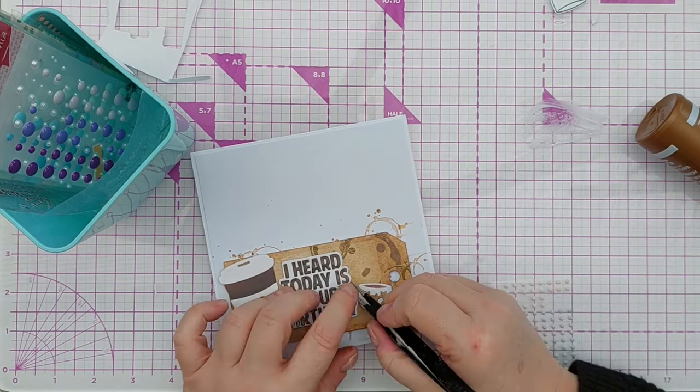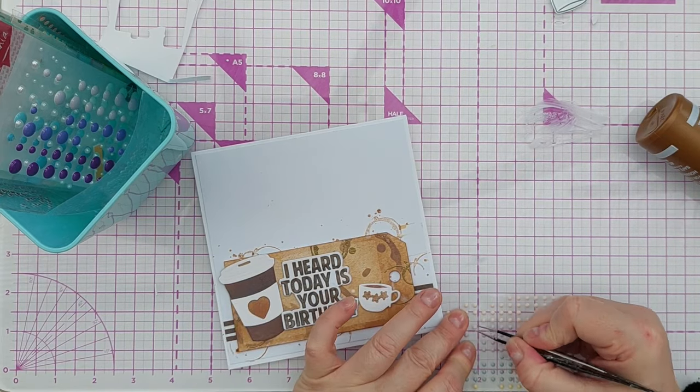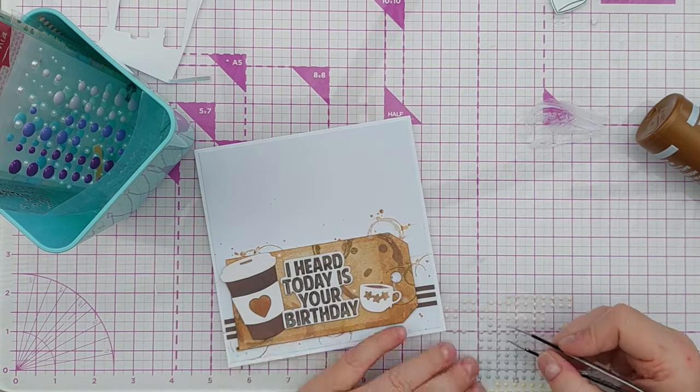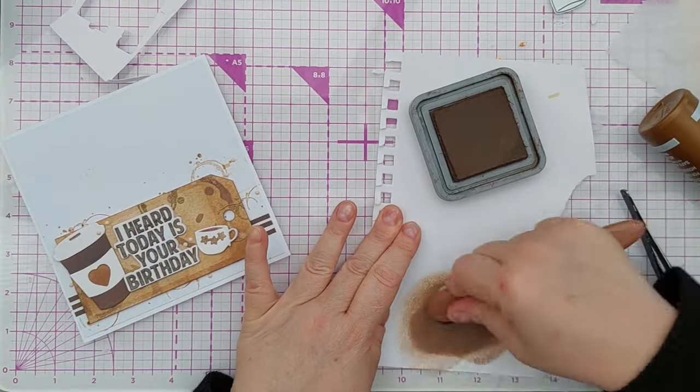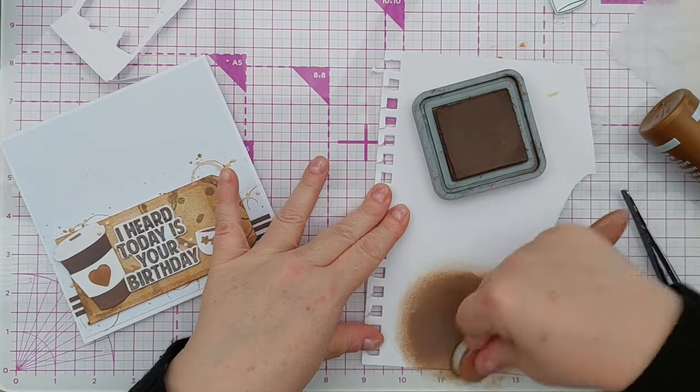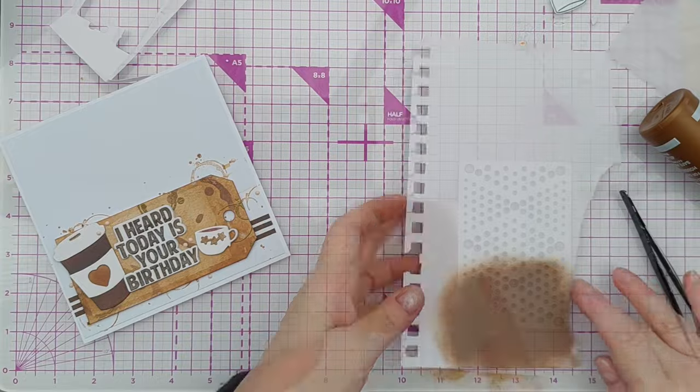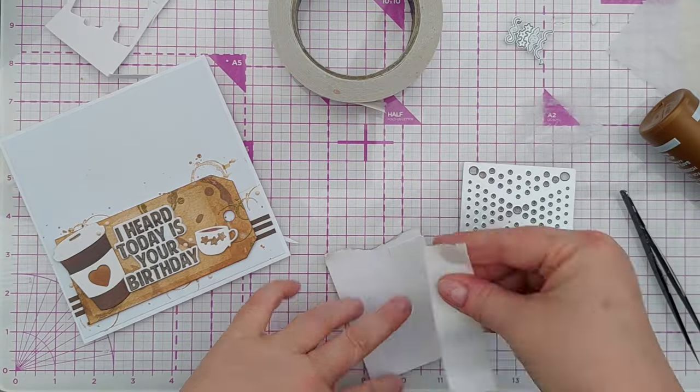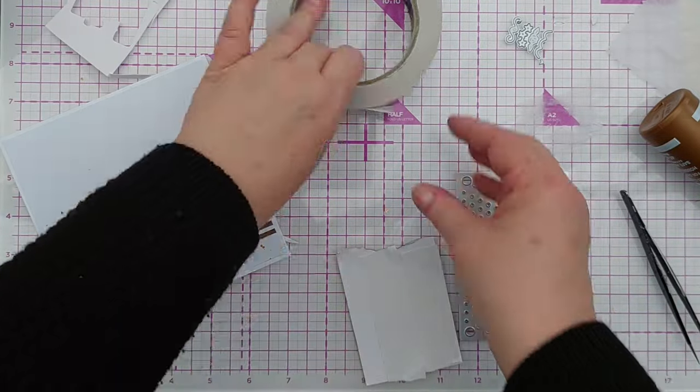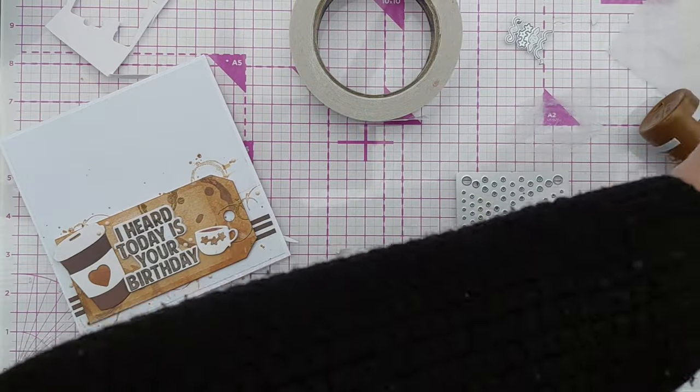I did also want some darker embellishments as well, so I took some more of that walnut stain, blended it onto some mixed media paper, added double-sided tape to the back, and die cut out some wonky circles.